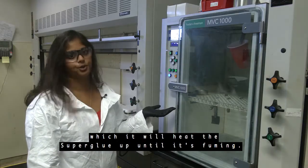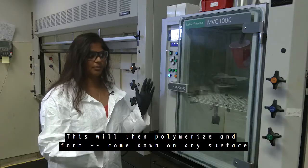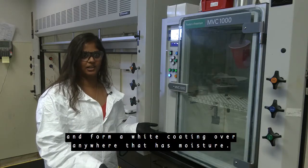It'll heat the superglue up till it's fuming. This will then polymerize and form, come down on any surface and form a white coating over anywhere that has moisture.